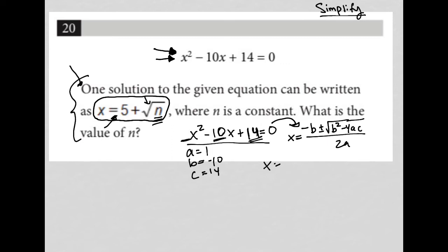We'd have x equals negative b, making that positive 10, plus or minus the square root of b squared, negative 10 squared is 100, minus 4a is 1, c is 14, all over 2a, making that 2.